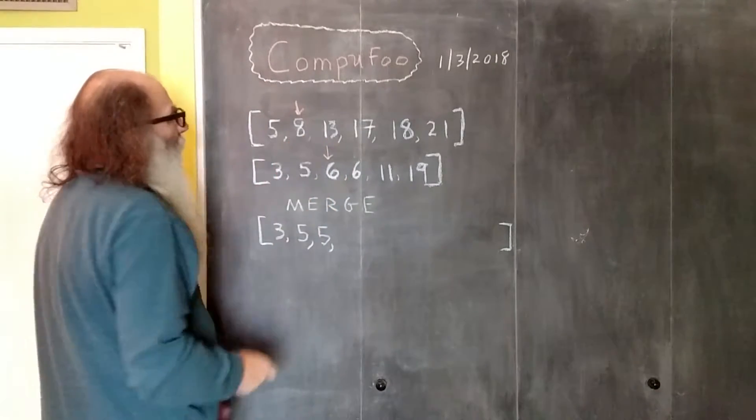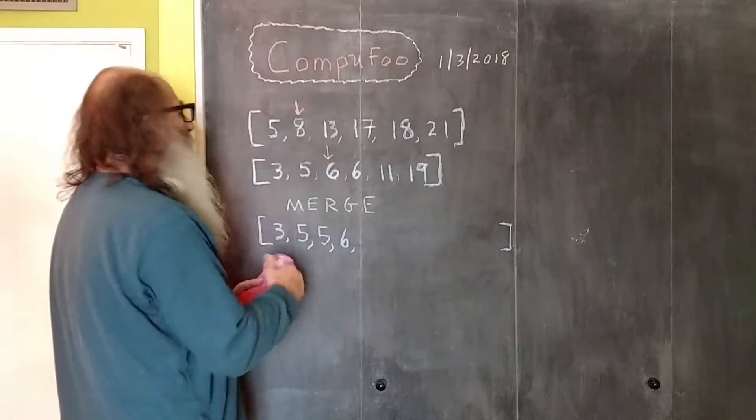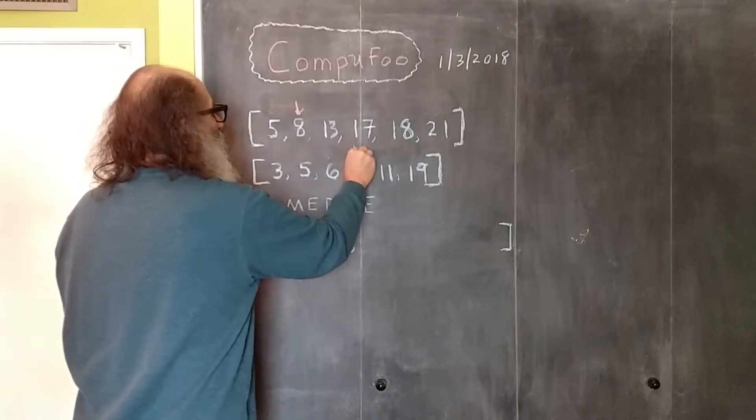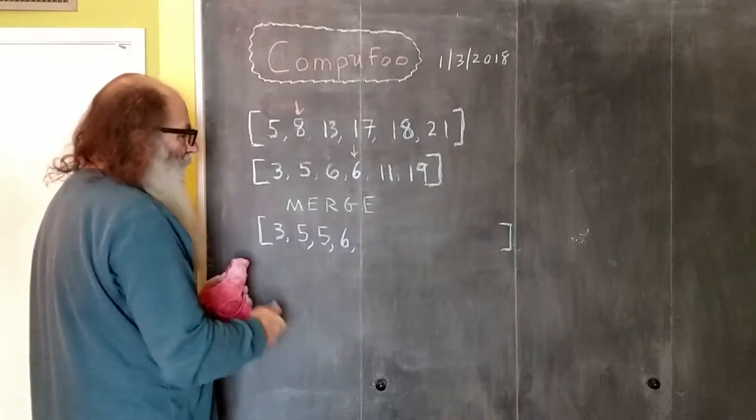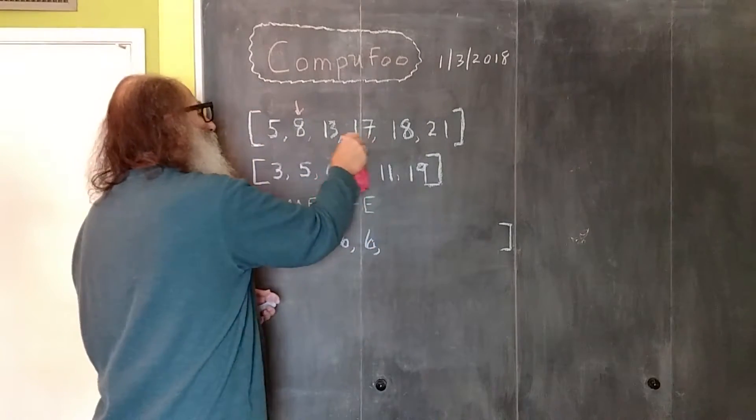Six less than eight? That's true, so the six goes in. We increment this pointer. Six less than eight? That's true, so the six goes in. We increment this pointer.